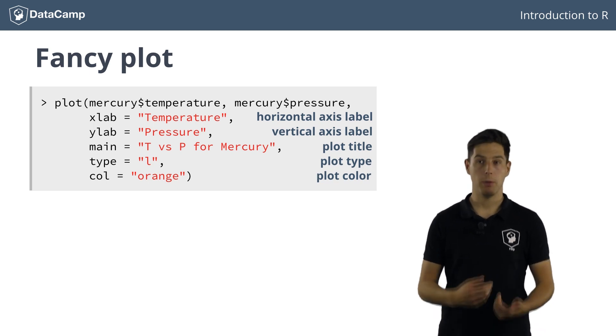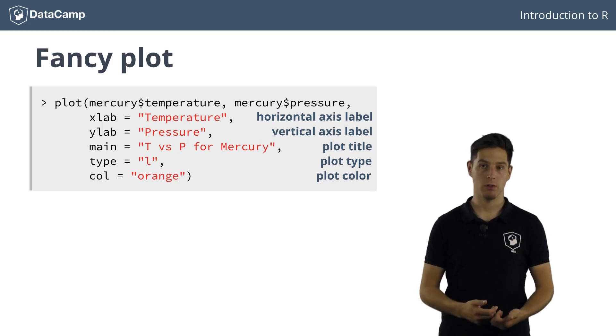However, the plot function also allows you to set a bunch of other graphical parameters. An example of such a graphical parameter is col, which specifies the color. But there are also many others.